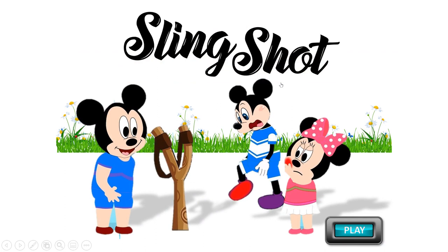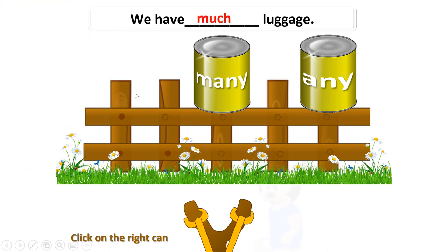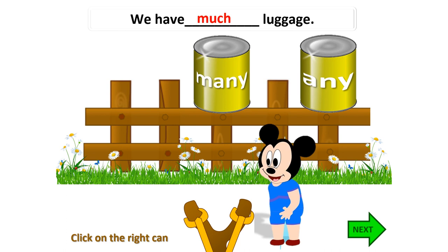Let's play a game so you will understand more. Are you ready? We have ___ luggage. The three choices are: much, many, or any. Much is the correct word in this situation. Listen and repeat: We have much luggage. Good job.